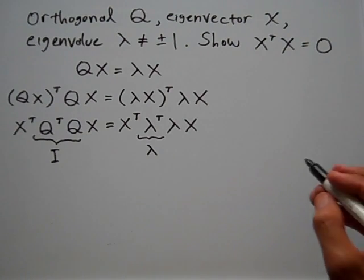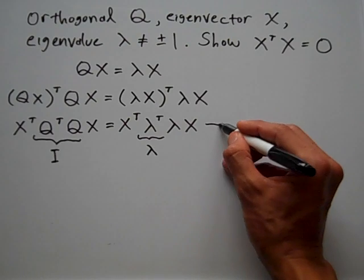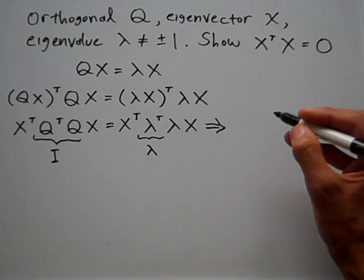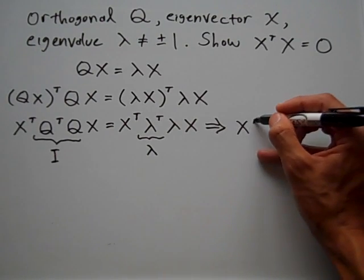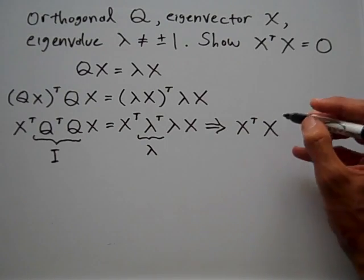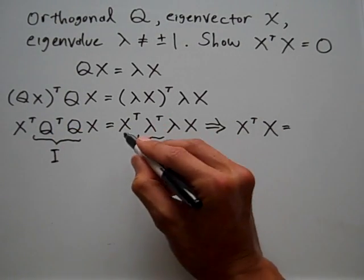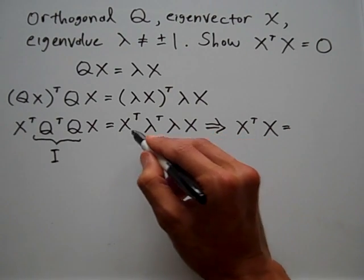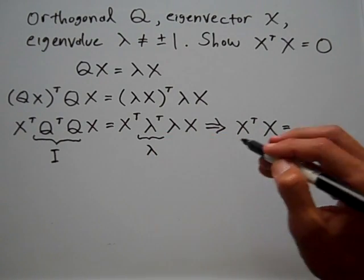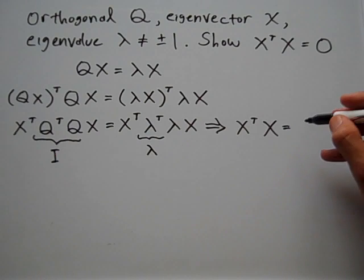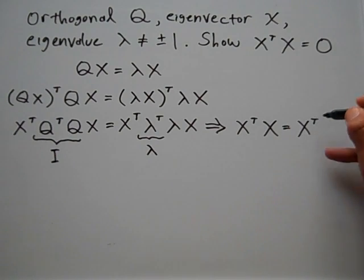So rewriting this, the left side becomes X transpose times X, and the right-hand side becomes X transpose times lambda times lambda, so that's lambda squared times X.